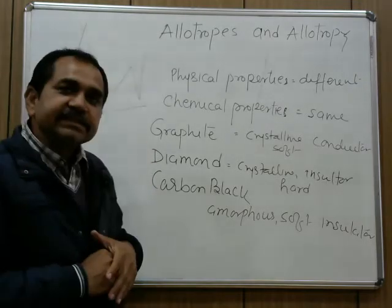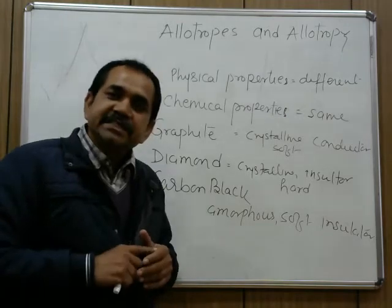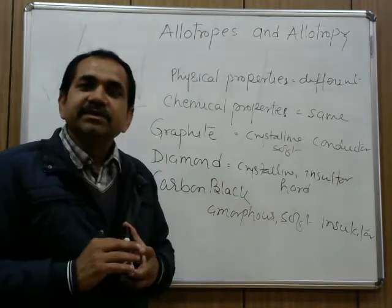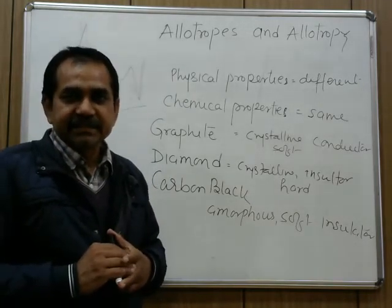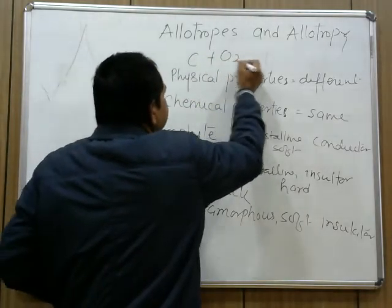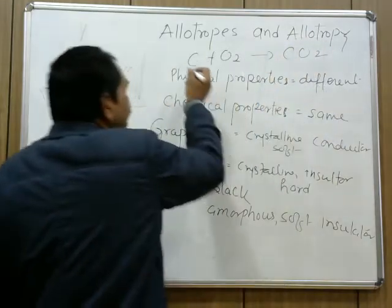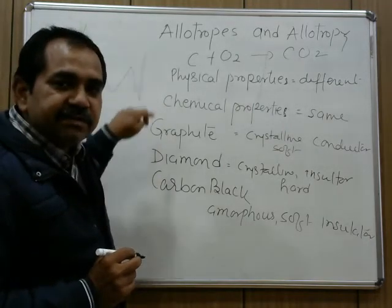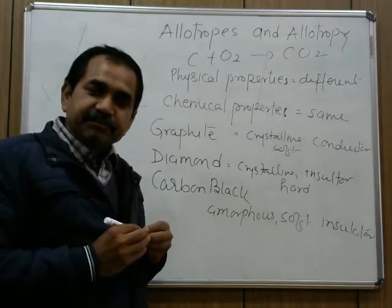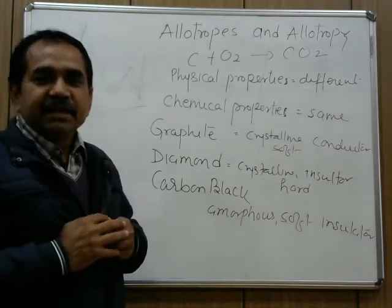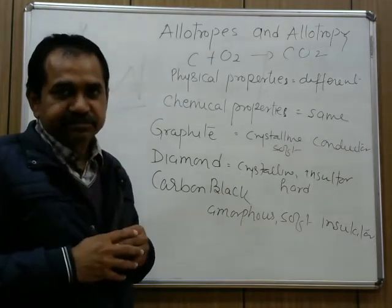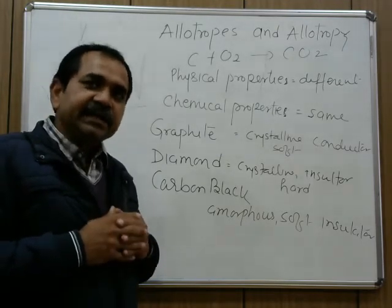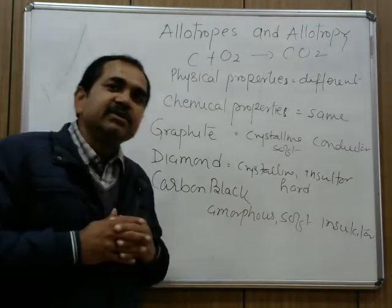All these different forms are allotropes of carbon. Their physical properties are different but their chemical properties are the same. If any one of these forms is burned in oxygen, they all give carbon dioxide. Other newly discovered allotropic forms of carbon include Buckminster fullerenes, graphene, and carbon nanotubes.